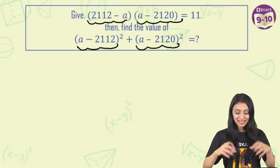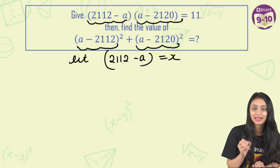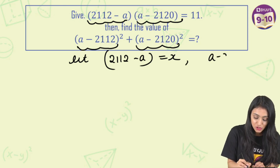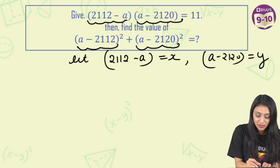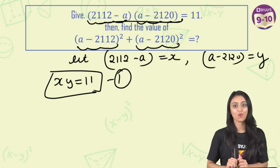So to make it simple, what we can do is, let's first assume that 2112-a, let's assume this as x. And this a-2120, let's assume this as y. So I can say one thing, from here xy is going to be equals to 11, let's mark this as equation number 1.